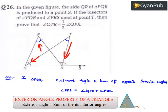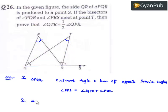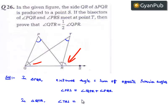Now let us also consider triangle TQR. In this triangle, the external angle is equal to the sum of two opposite interior angles. That is, angle TRS is equal to angle TQR plus angle QTR.